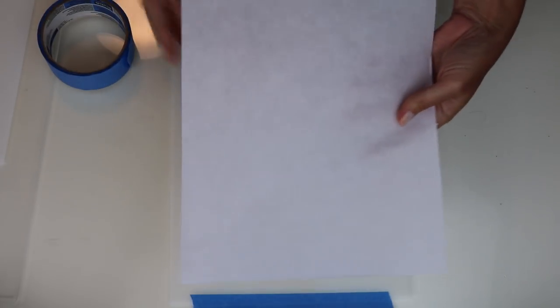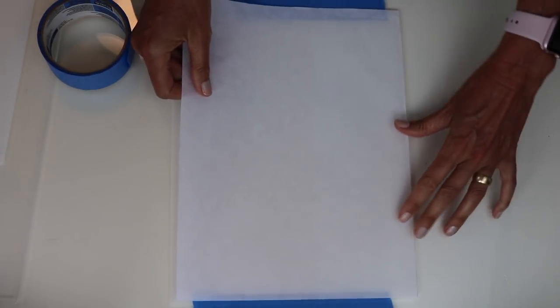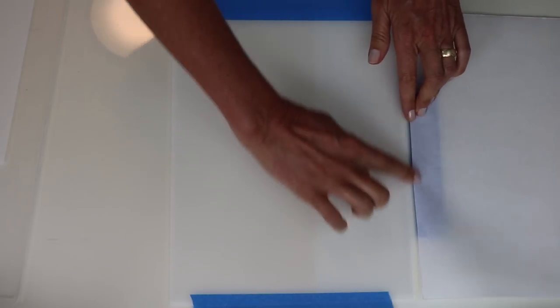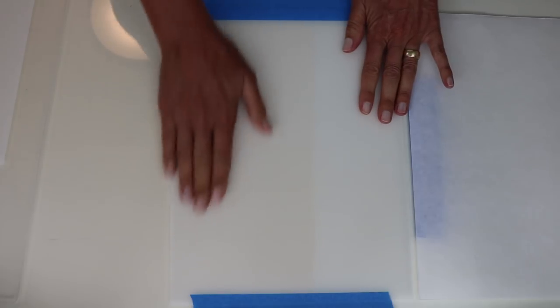This is Kozo or a mulberry printmaking paper. It has a smooth and a rough side. You can choose either one. Align your printmaking paper with the duralar sheet with your preferred printing surface facing down and make a little hinge with removable masking tape.